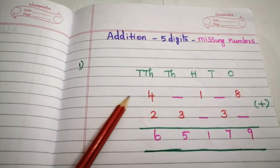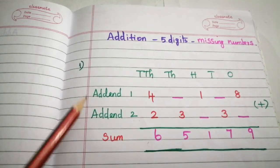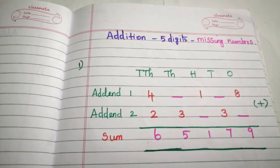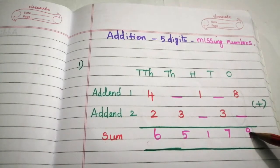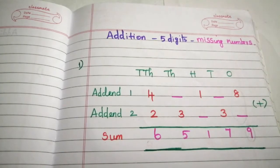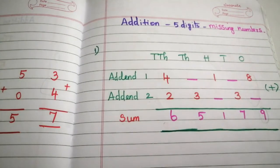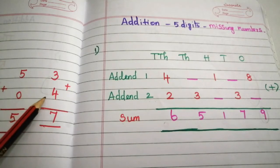This is the first problem. We know these two are addends and this is the sum. In any addition problem, the sum digit is always greater than the addend digits or equal to any one of them. For example, if we add 3 and 4, we get 7. 7 is greater than 3 and 4. If we add 5 and 0, we get 5, which is equal to one of the addend digits.